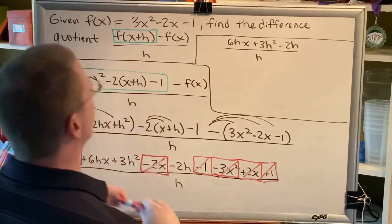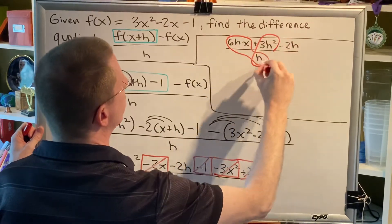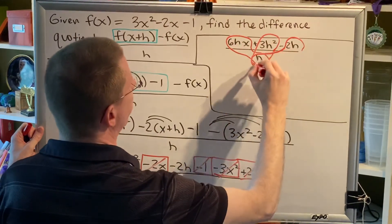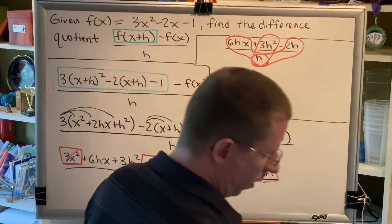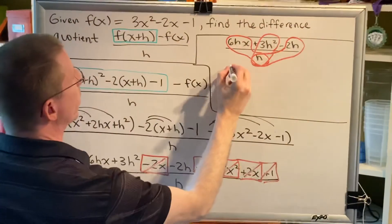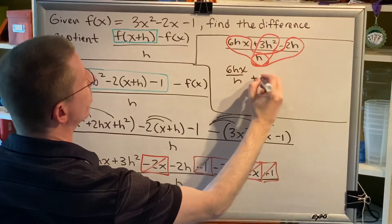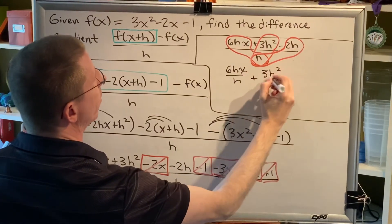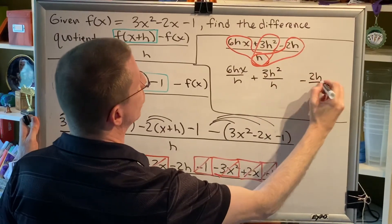I call this method drawing the heart, because it kind of looks heart-shaped when you're done. So this is going to be a 6hx divided by an h, plus a 3h squared divided by an h, minus a 2h divided by an h.